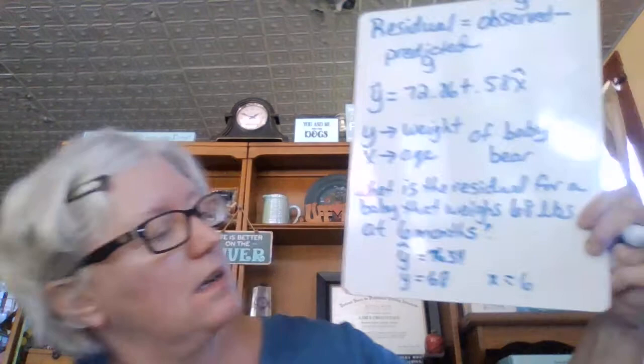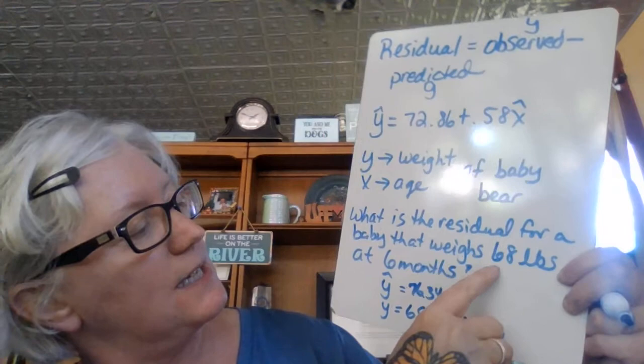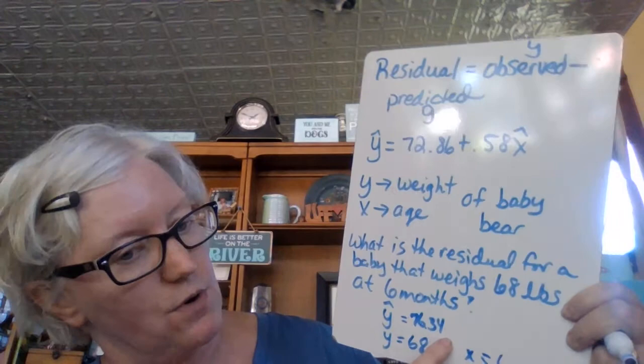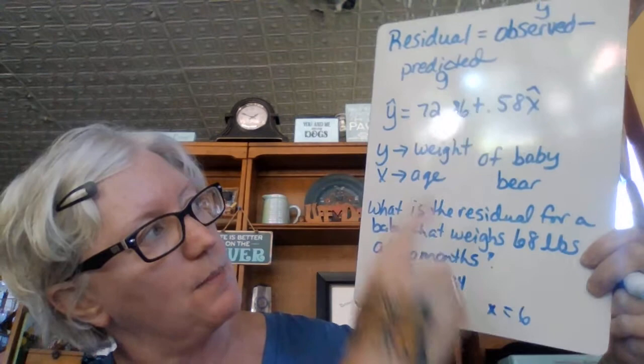So based on the observed fact that the baby was 68 pounds at six months, when I put 6 in for x and calculate it out, it's not 68 — it's 76.34. The actual observed value is 68, but the predicted from our equation is 76.34. So the residual is the difference between those, which is 8.34.